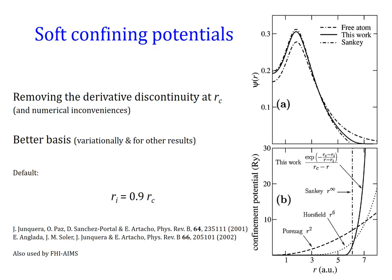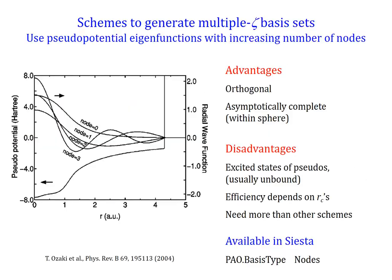Once we have the minimal basis, either hard or softly confined, we need to generate the further tiers — the further zetas — for radial flexibility. There is a very traditional method, which is to use the excited states of the soft or hard confined pseudopotential. That has nice advantages: it is quite systematic, you don't need to do anything. The only problem is that it takes quite a few of them to get convergence and calculations can get expensive. OpenMX, a code very similar to SIESTA that was developed by Osaki after SIESTA, uses that kind of basis set as its default. We can use it, but it is not our default.